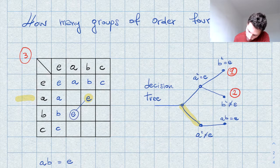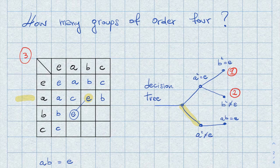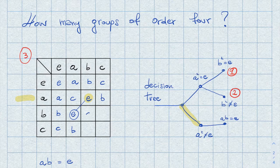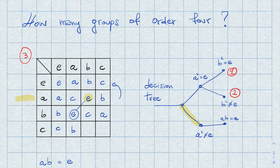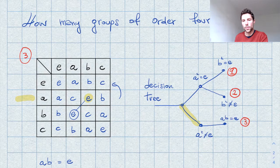So we also place E symmetrically. Going back to the row of A, there are no other choices than putting B and C in the remaining slots. By the same reasoning we fill in the rest of the row of B: C cannot go in the last position without being repeated in a column, so it goes earlier, forcing A and then A and E in the final entries. This is the multiplication table of the third group.